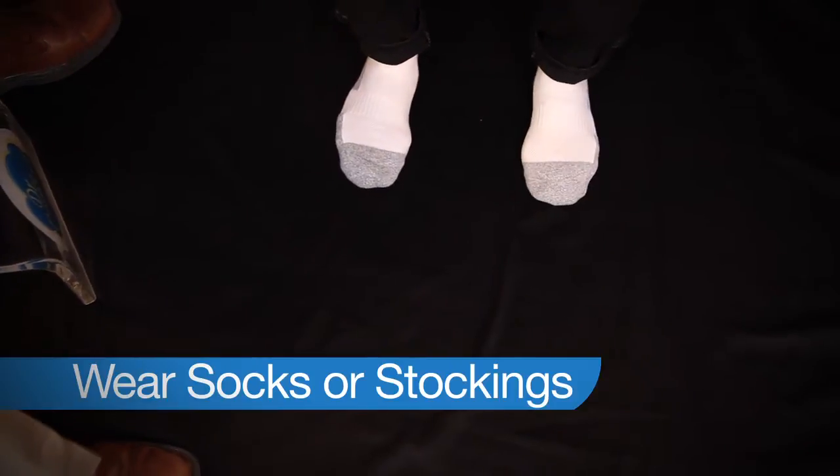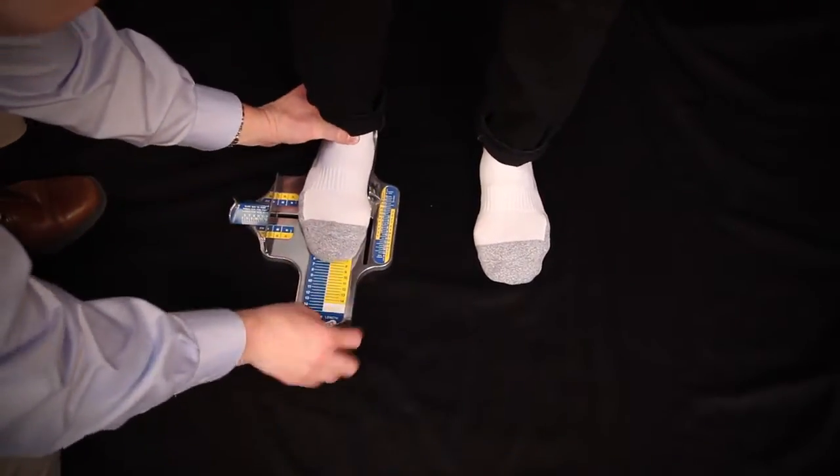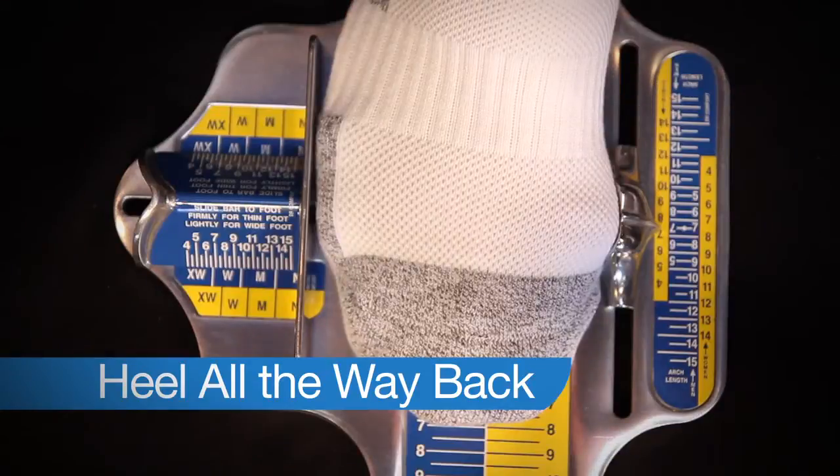If you will also notice, Jane is wearing socks. And you want to have the patient wear socks or stockings, preferably the socks or stockings they'll be wearing with the shoes. Now the first step is to make sure that they're properly placed on the Brannock device with the heel all the way back. And you'll see I grabbed Jane's instep.